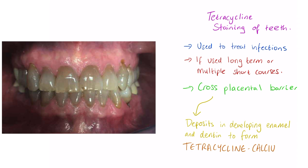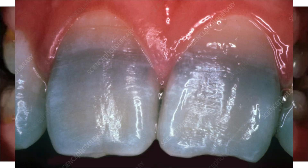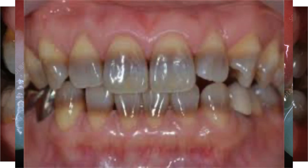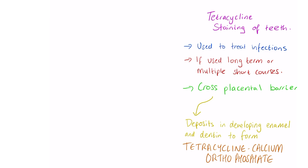This complex causes the teeth to become discolored, especially when the adult teeth erupt and are exposed to the sun. Looking at the pictures, the staining appears as a band over the teeth — it can be a yellow stain, a green-gray stain, or a brown stain.